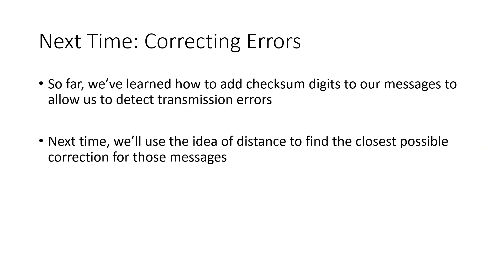So far in this video, we've learned how to use checksum digits to add them to the end of our messages to allow us to detect transmission errors. Next time we're going to use the idea of finding the closest possible message. That's something we talked about at the beginning of this video. We're going to use that same idea to try to find corrections for our messages.